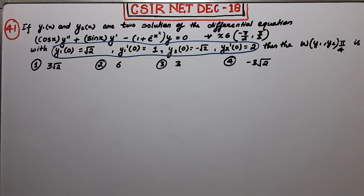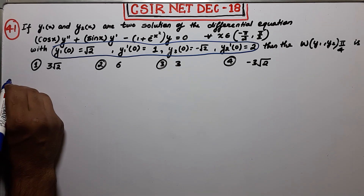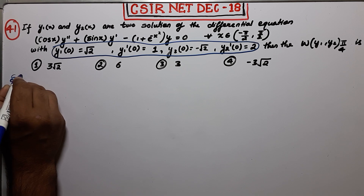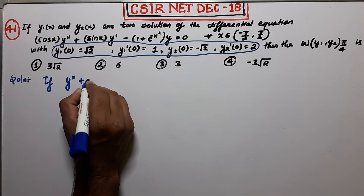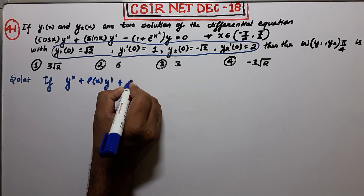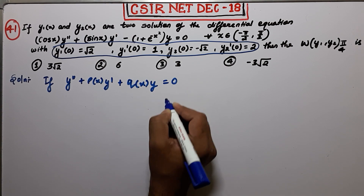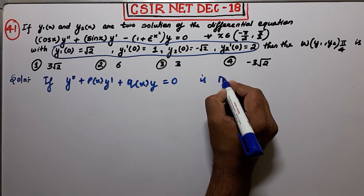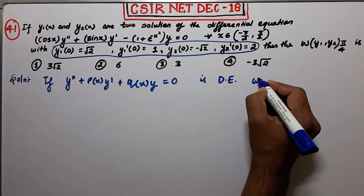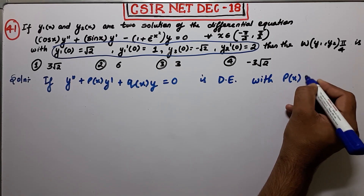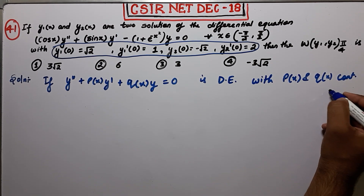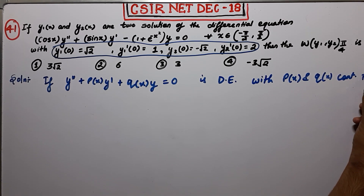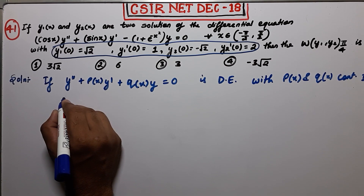So let us make this as a note. If your equation is of the form y'' + p(x)·y' + q(x)·y = 0, this is your differential equation with p(x) and q(x) continuous in the given interval I — I am talking about continuity in the given interval I.